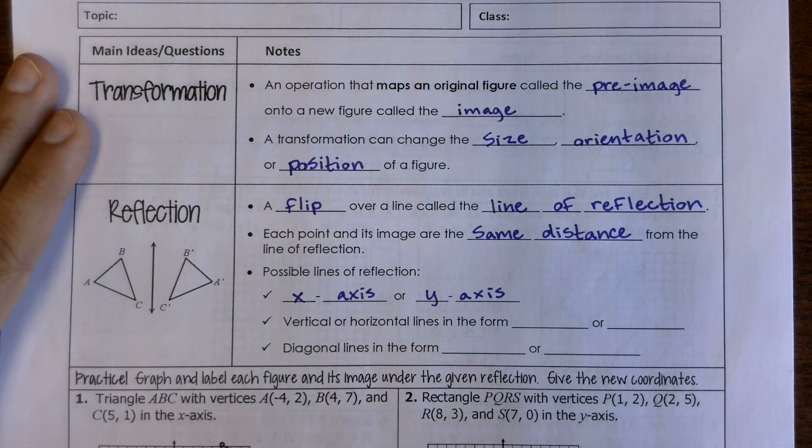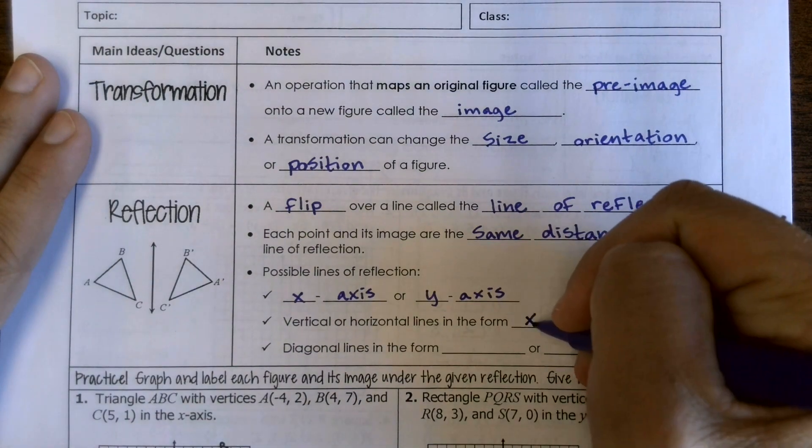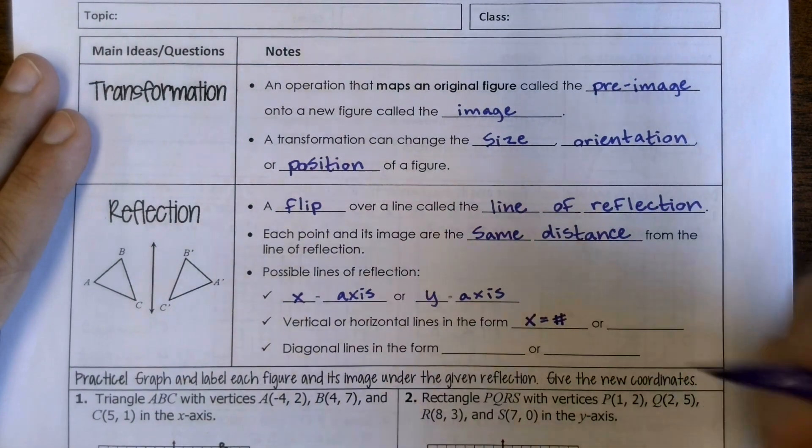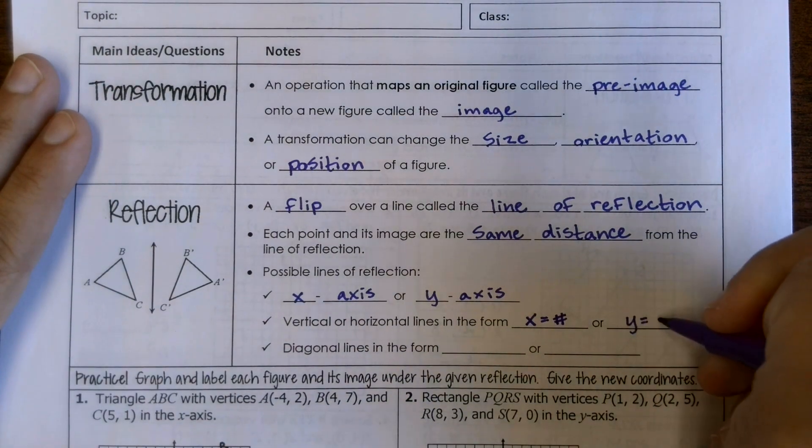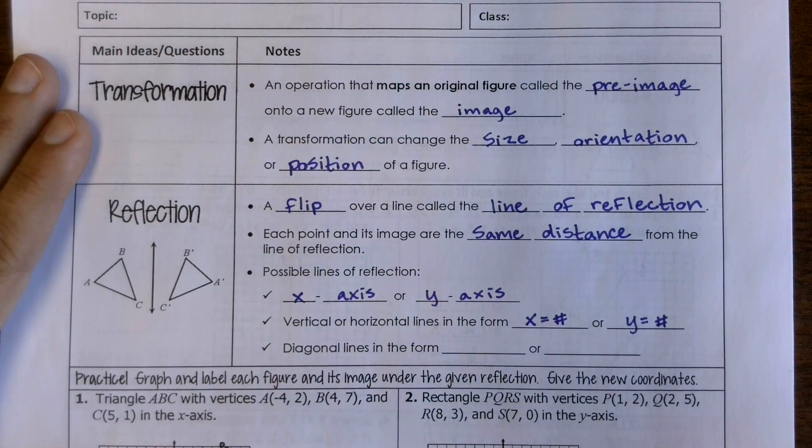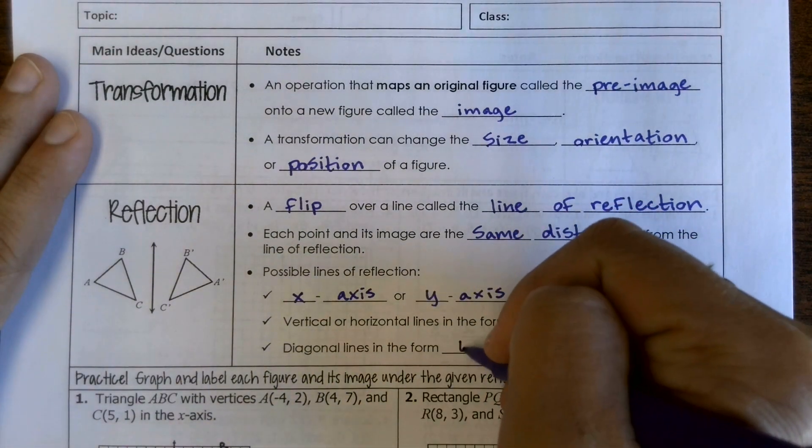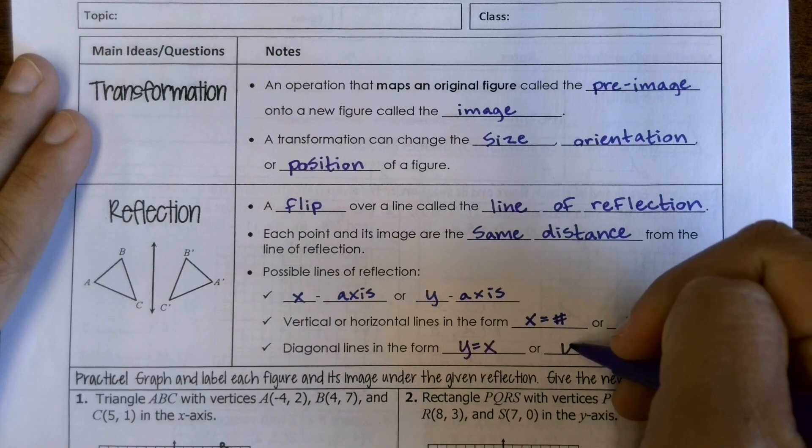they're always in the form x equals and then a number. If it's a horizontal line, it's always y equals and then a number, because that slope is zero. And then it could be flipped over a diagonal line in the form y equals x or y equals negative x.